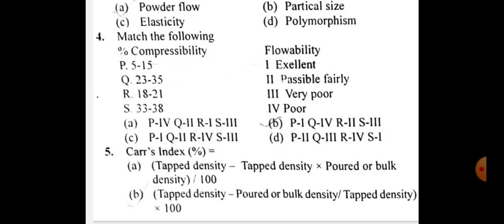The formula for Carr's index in percentage is: tapped density minus poured or bulk density, divided by tapped density, times 100.